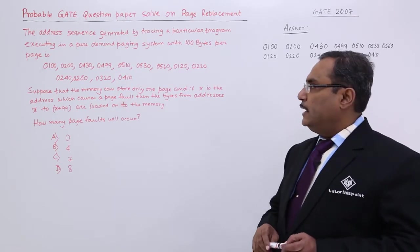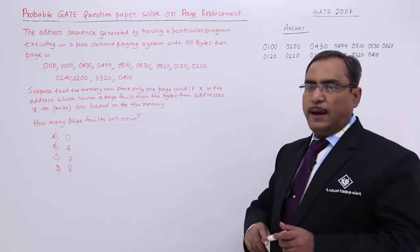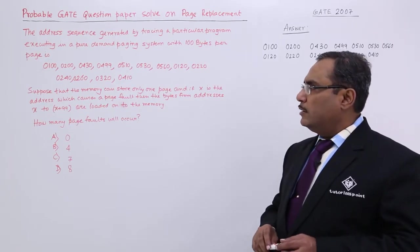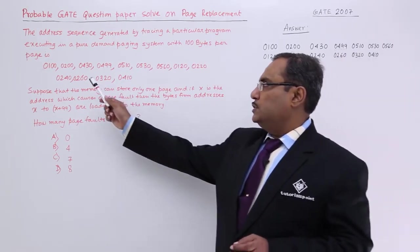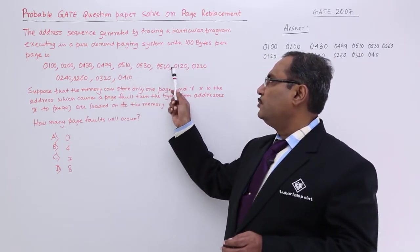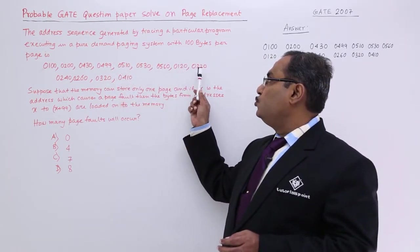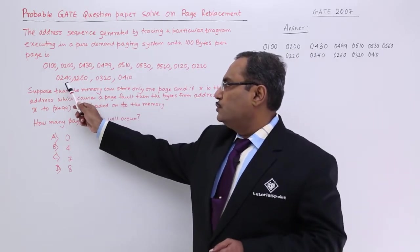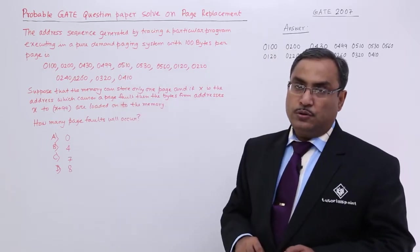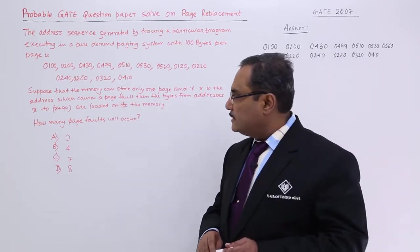That is the page size and these are the addresses that have been referenced during the execution of a program: 100, 200, 430, 499, 510, 430, 560, 120, 220, 240, 260, 320 and 410. These are the addresses that got referenced.